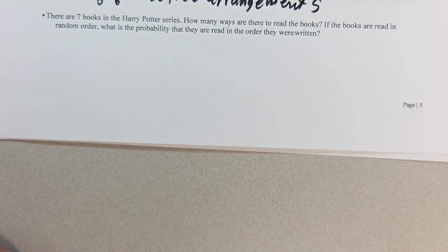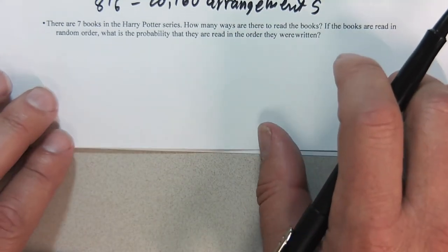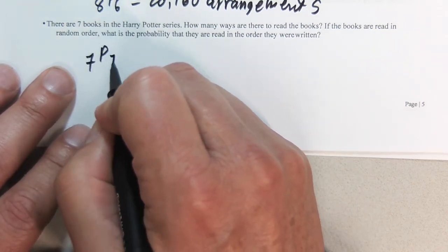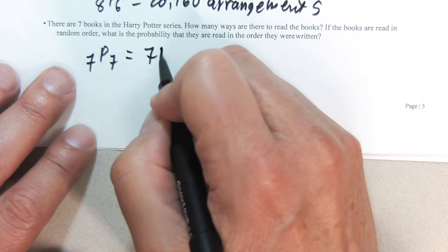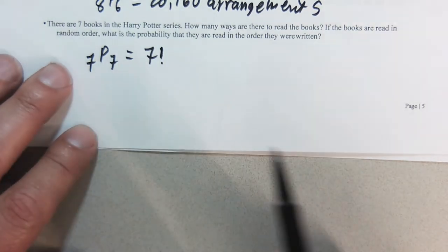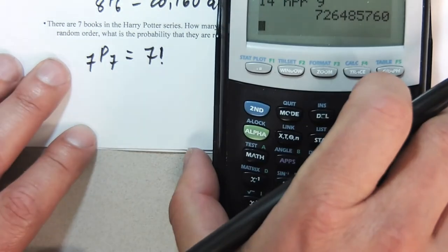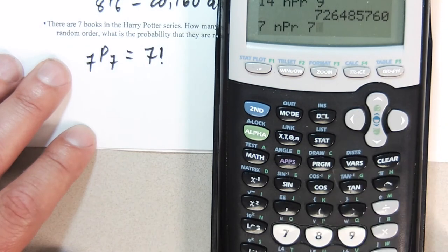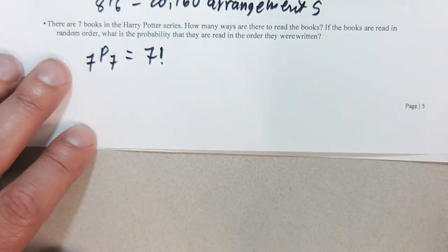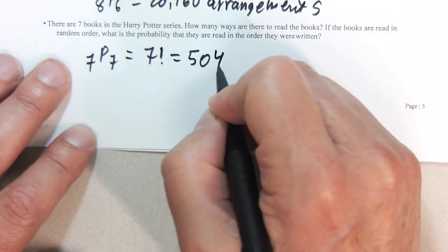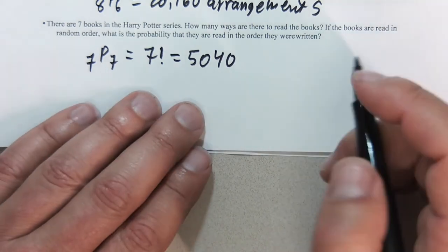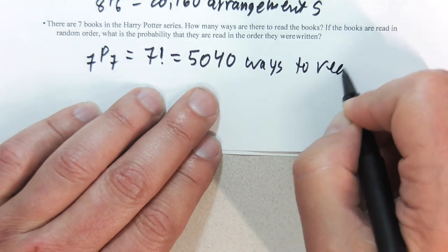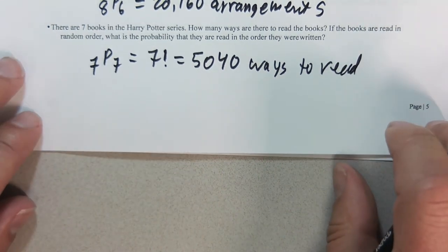And lastly, there are 7 books in the Harry Potter series. How many ways are there to read the books? Now we can actually do this one two different ways. This is 7 permutation 7, which actually turns out to be 7 factorial. Because we're reading all the books, we're not choosing only 3 of them or something. So once again, 7 permutation 7 is 5,040.